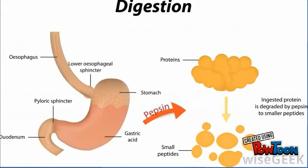An example of a digestion diagram with pepsin: food will go through the esophagus, then go to the lower esophageal sphincter. After that, it will be digested in the stomach, then turn into gastric acid and pass through the pyloric sphincter, go out from the duodenum and become pepsin. Then pepsin will break ingested protein into smaller peptides.